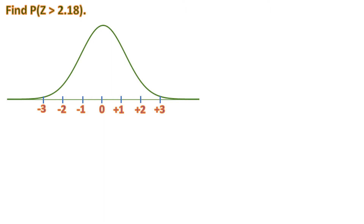Now let's find the probability that z is greater than 2.18. We plot 2.18 on the normal curve — it's around here — and put a line. Since it's greater than 2.18, the shaded part goes to the right. We also mark 0 in the center, because our z-table starts from 0. The z-table gives us the area from 0 to 2.18, and we'll use that to find the shaded area.